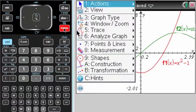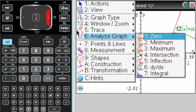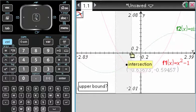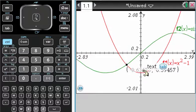When I press menu here and I go to analyze graph intersection, lower bound is to the left, upper bound is to the right. You can see that I got all these decimals.